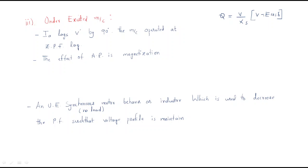In the synchronous motor, terminal voltage has a higher value compared with the excitation voltage. In the under-excitation condition, V is greater than E·cos δ, so Q becomes a positive value. Since cos δ equals zero under no-load, V is simply greater than E.